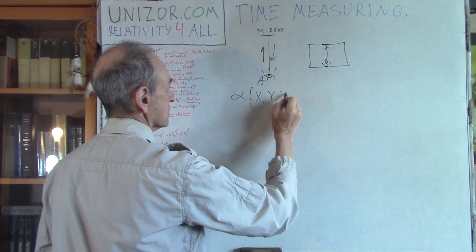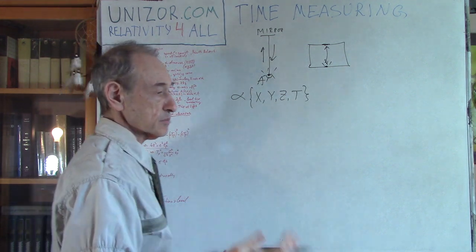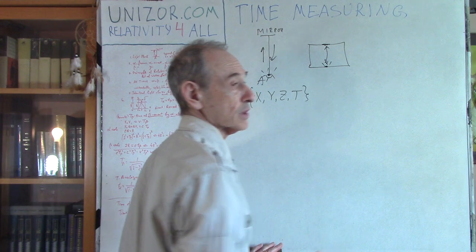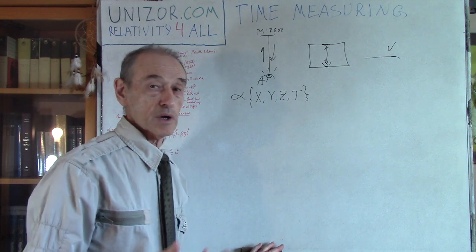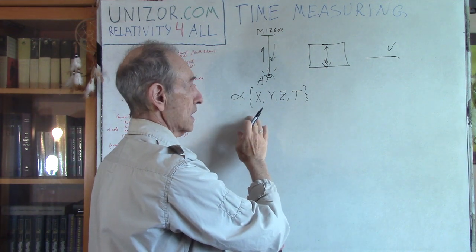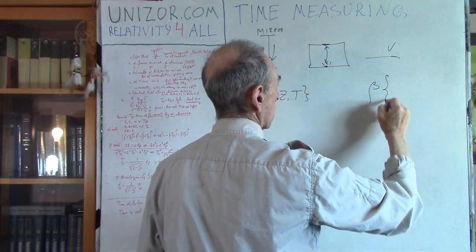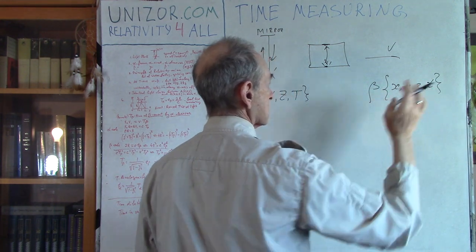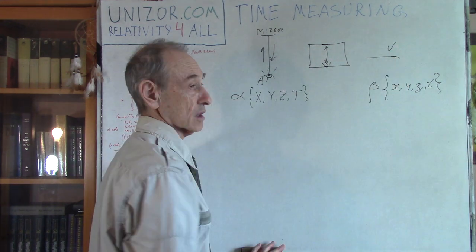At some point, we have the same car but now moving with some speed v. This same car represents a different inertial system. The first inertial system is called alpha, when the car stands still, and another system would be beta, with lowercase coordinates x, y, z, and time t to describe events in that particular system — in this case, the moving car.